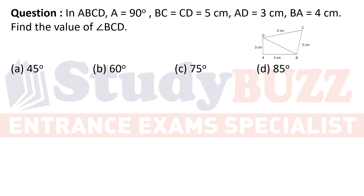The first question: ABCD is a quadrilateral where angle A is 90 degrees. BC and CD sides have the same length of 5 centimeters, AD is 3 centimeters, and BA is 4 centimeters. We have to find the value of angle BCD.